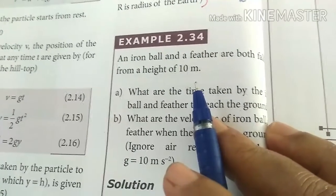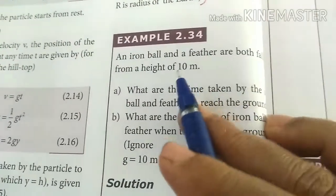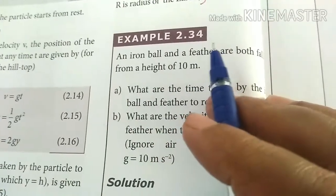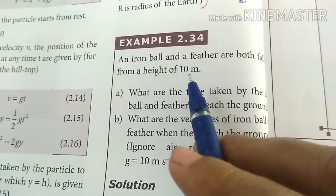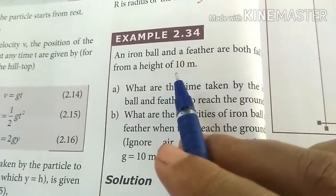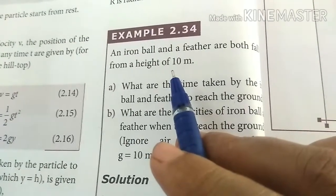An iron ball and a feather both fall from a height 10 meter, 10 meter height.